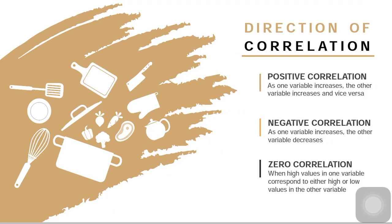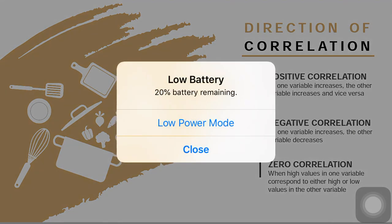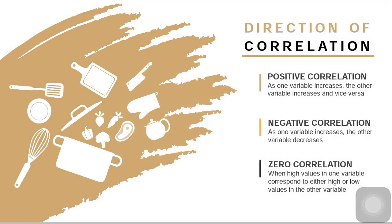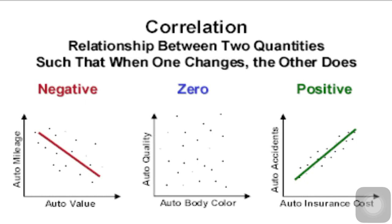But when one variable increases and the other may increase or may decrease, then we call that a zero correlation. Here's how you check the graph in these three directions. The first one, the slope is going down, so it's a negative correlation. The second one, you could not see a trend, so that's a zero correlation. The third one, the dots are going up, so it signifies a positive correlation.